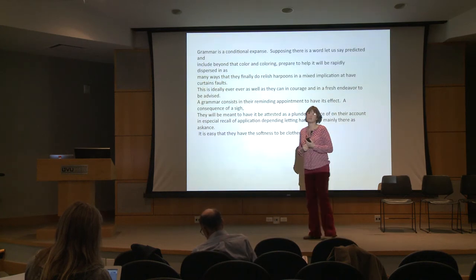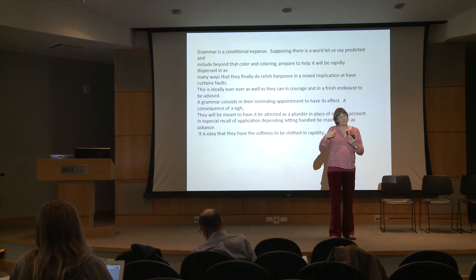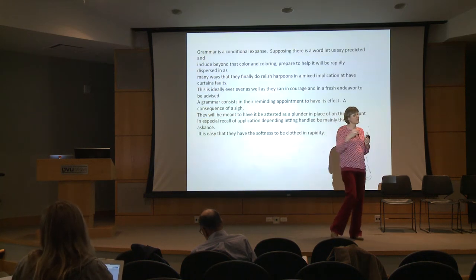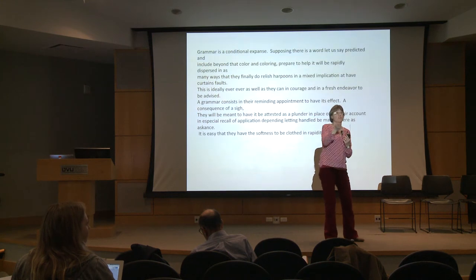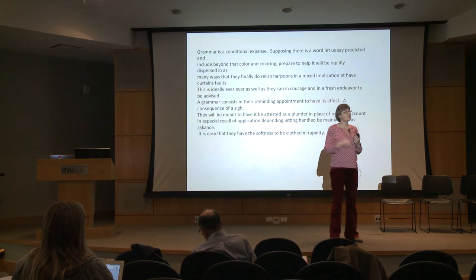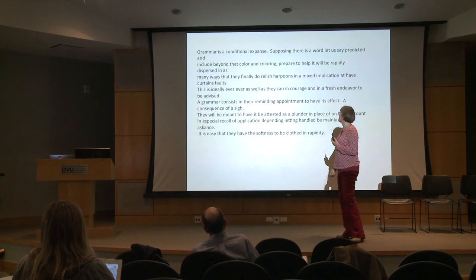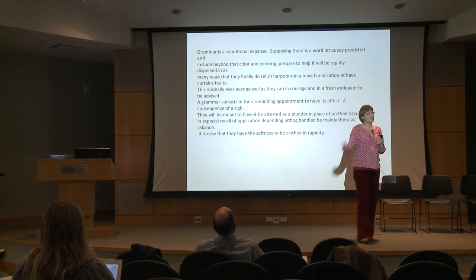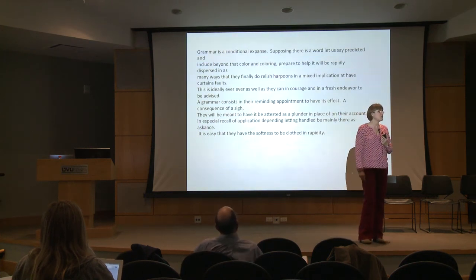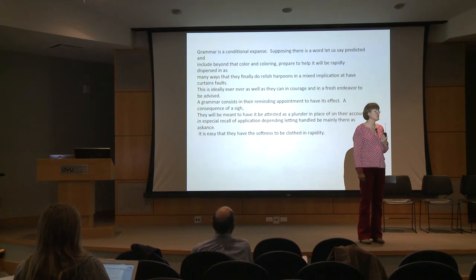Gertrude Stein is going against conventional meaning in language and the conventional way grammar works. She's going against the way solid networks have been established in our brains and kind of wants to take a different corner — you get to a switchboard and ask, am I going the way I've always done or a different way today? She decides to go a different way. But it's not entirely random — she's actually talking about the thing she's doing. She's talking about grammar. This is from a piece called 'Arthur, a Grammar.'